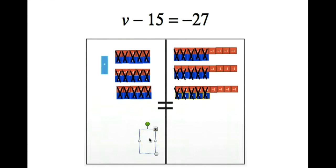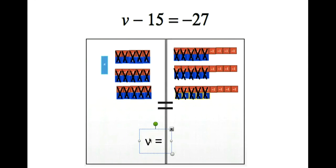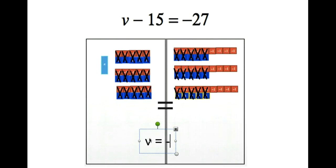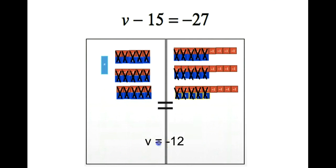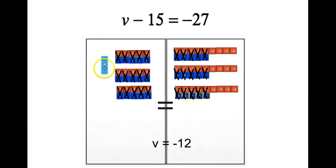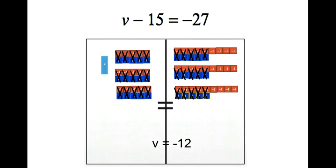Now I'm going to go in and X out all my zero pairs and see what I have left over. On the left, I am left with the variable v. On the right, if I count them, I have three groups of four and they are negative — so I have negative 12 left. My final answer is v equals negative 12, because v is the only thing that doesn't have an X on it, and negative 12 on the right are the only ones that do not have an X on them.